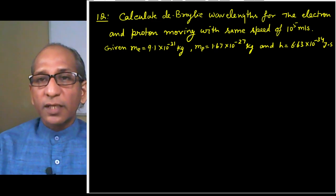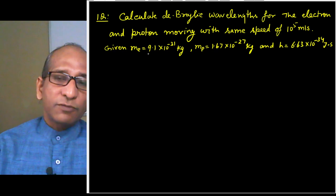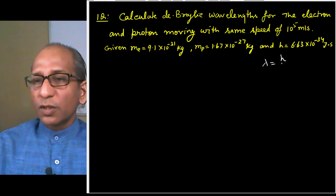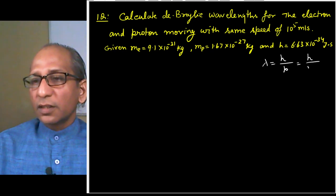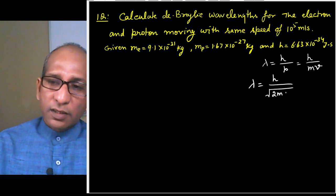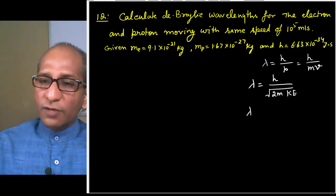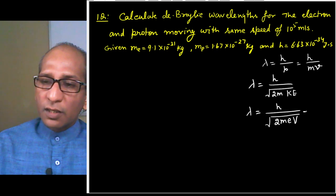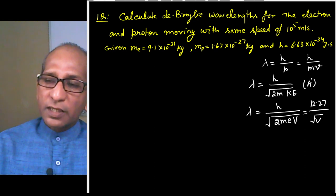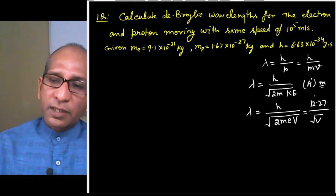Now let us solve numerical problems. The formulas are clear: λ = h/p, p = mv, so λ = h/mv as the base formula. For the first case: λ = h/√(2m·KE). For the second case (accelerated electron): λ = h/√(2meV), or directly 12.27/√V angstroms. For the third case (kinetic theory of gases): λ = h/√(3mk_BT).